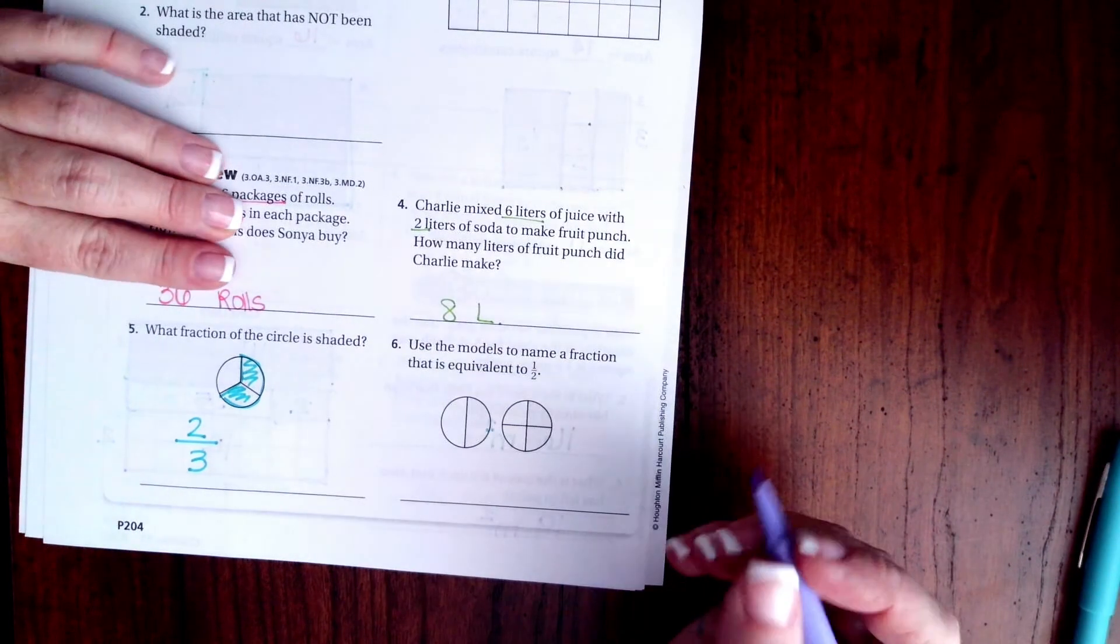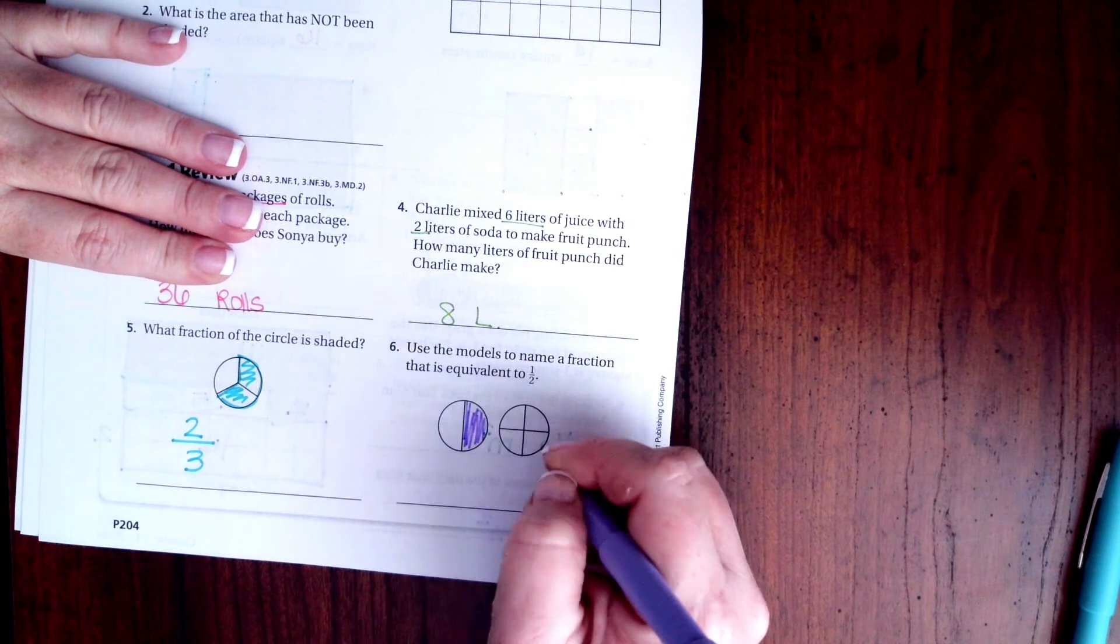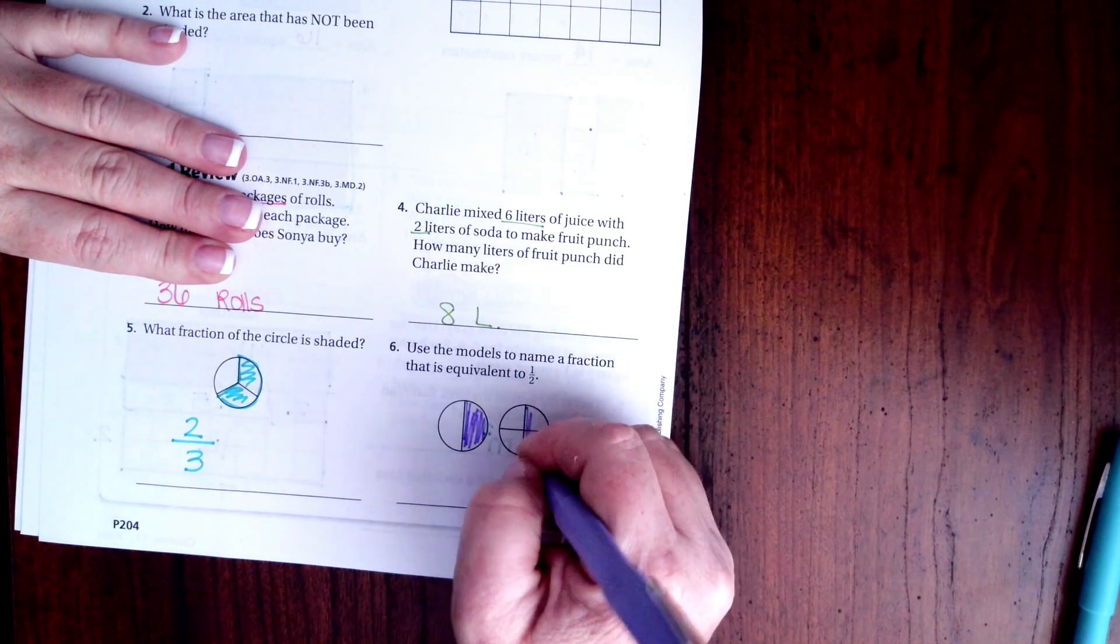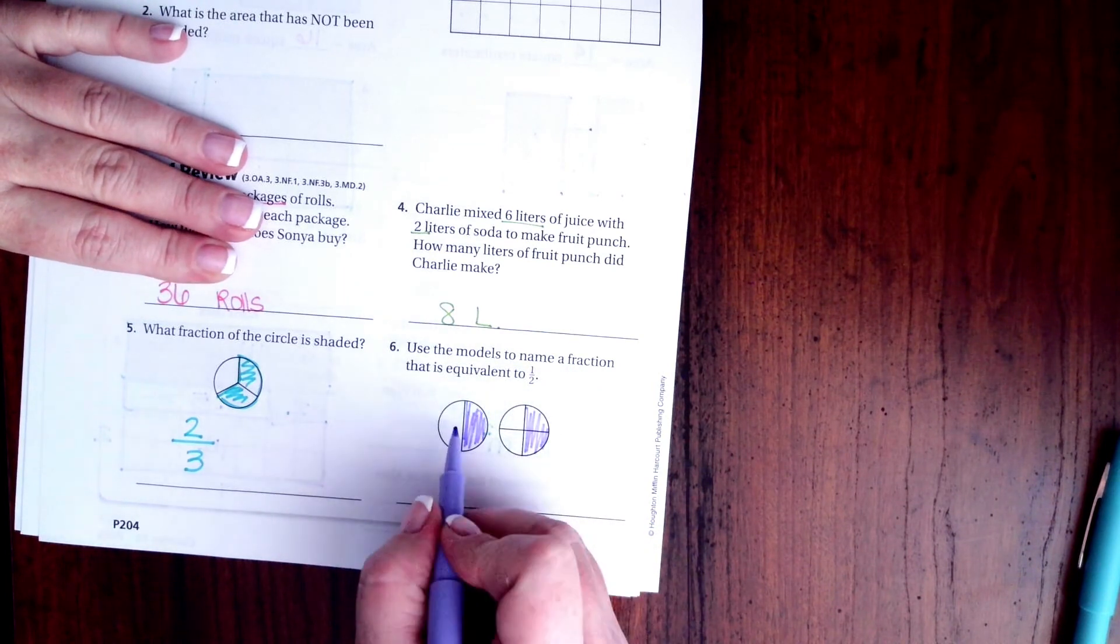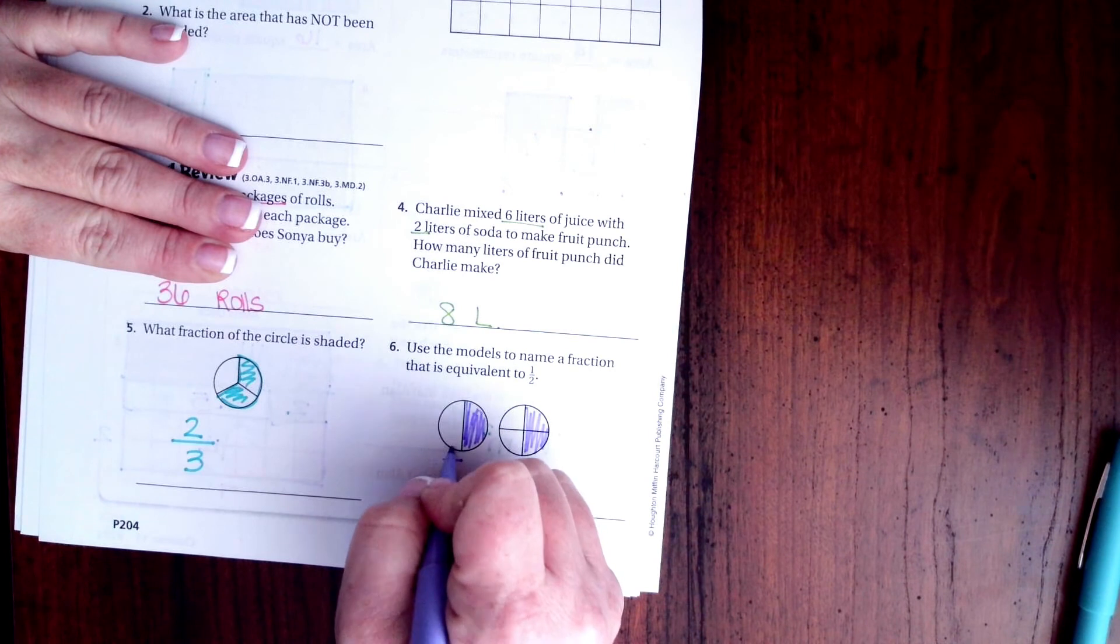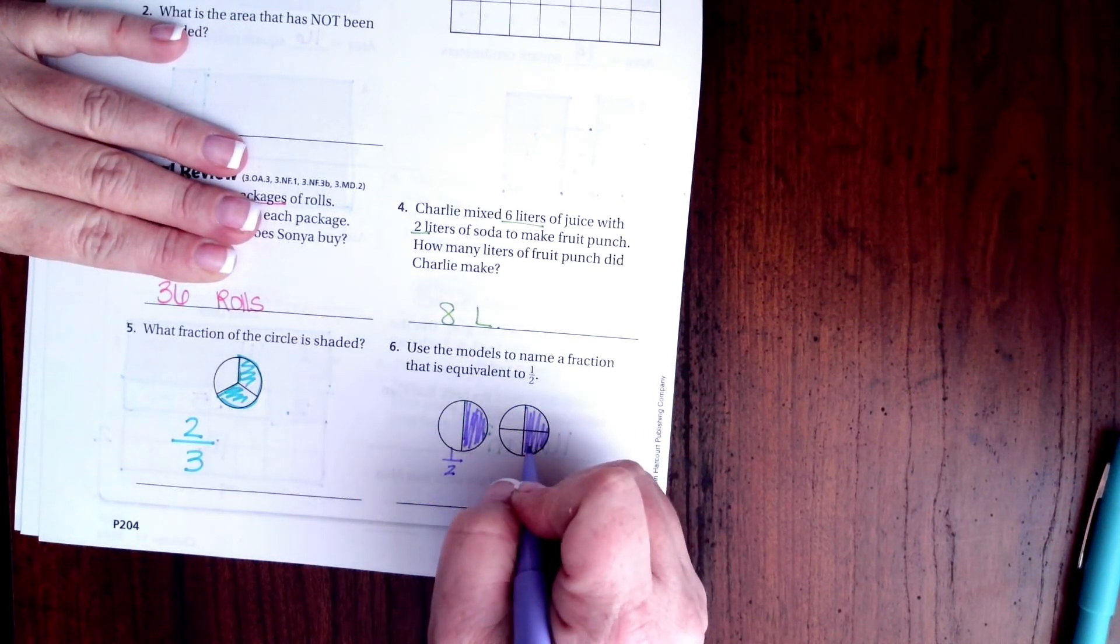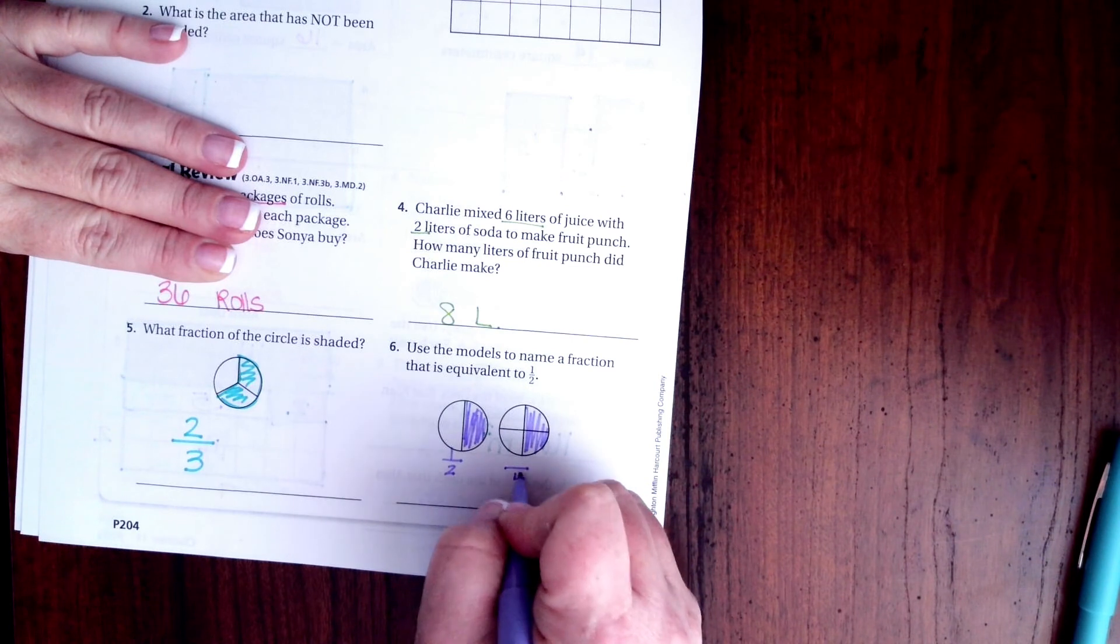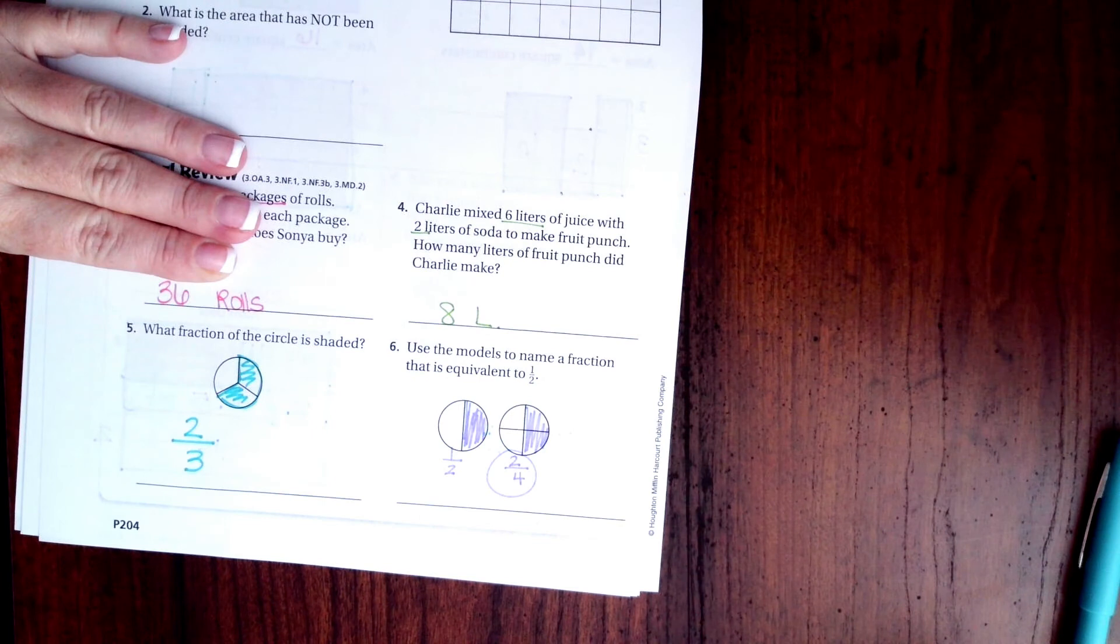Now, on this one, I'm going to do the shading again. Use the models to name the fraction that's equivalent to 1 half. So, this is 1 half, because there are 2 pieces all together, and 1 of them is shaded. On this one, it's still half of it that's shaded, but there are 4 pieces all together, and 2 of them are shaded. So, 2 quarters.